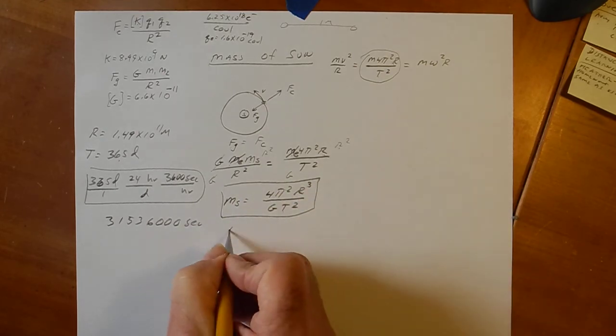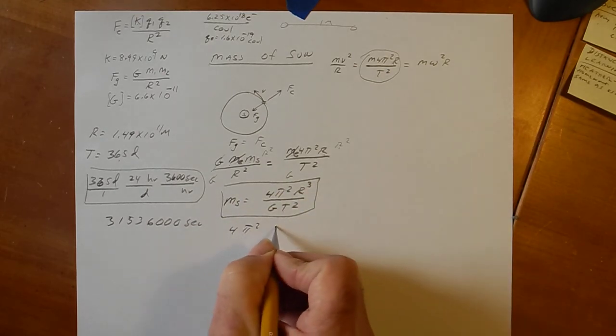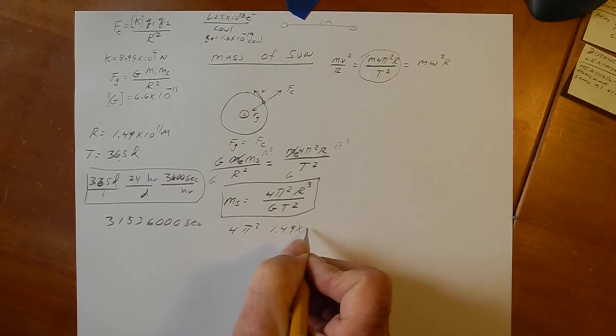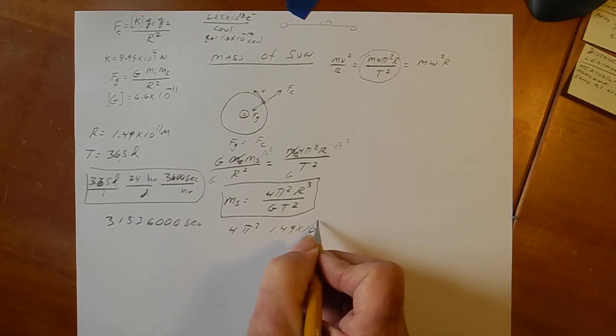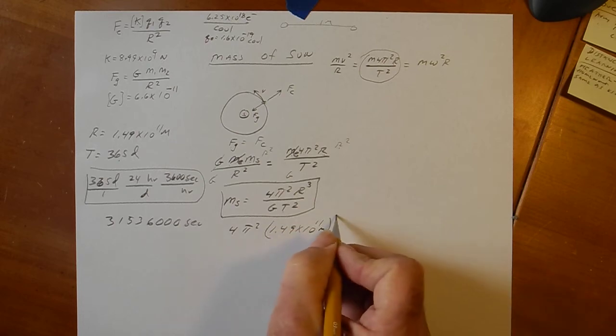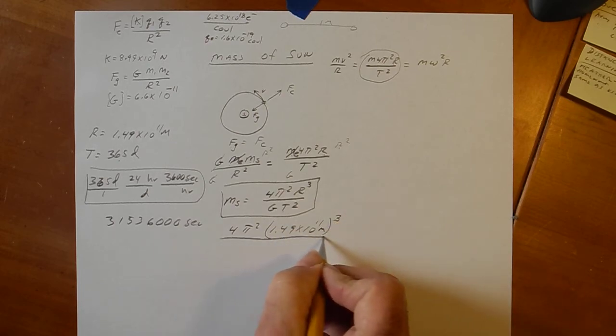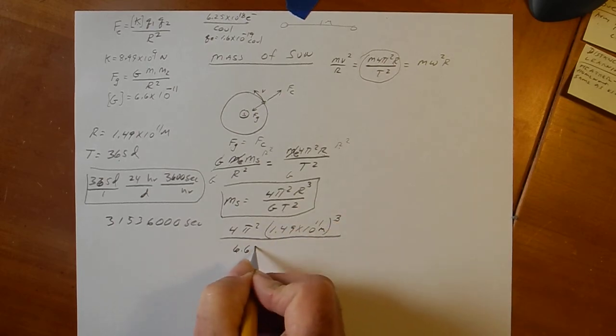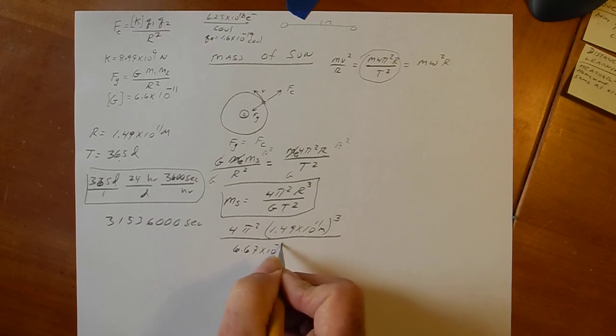Plug into there. So, 4 pi squared, 1.49 times 10 to the 11th meters. Cube this. Boy, that's getting huge. Divide it by 6.67 times 10 to the minus 11th.